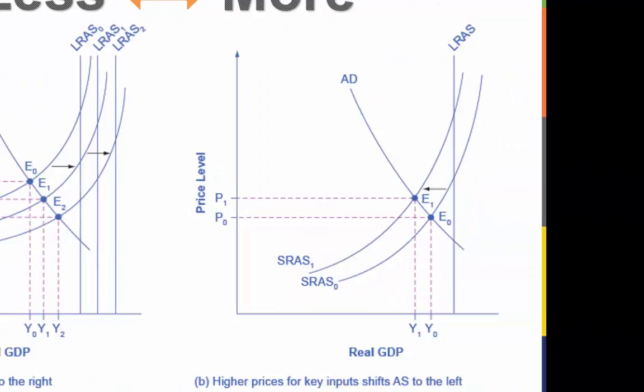A higher price for inputs means that at any given price level of outputs, a lower quantity will be produced, so aggregate supply will shift to the left from AS0 to AS1. The new equilibrium E1 has a reduced quantity of output and a higher price level than the original equilibrium E0.